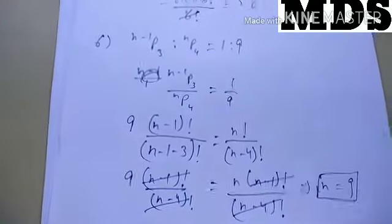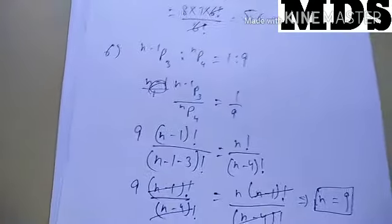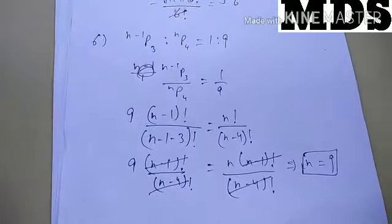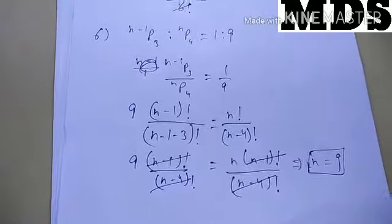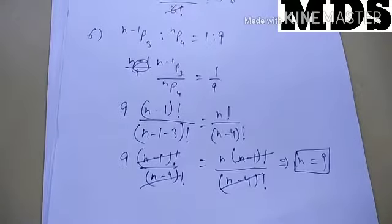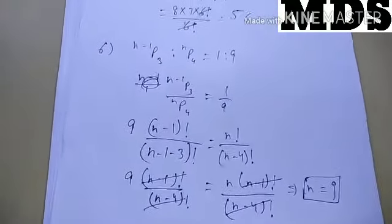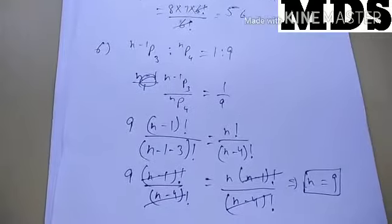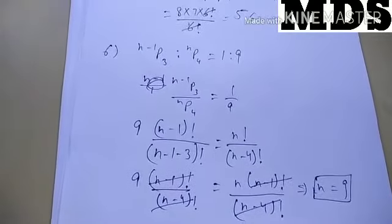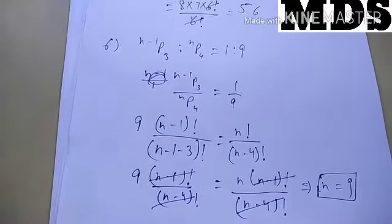The (n−1)! cancels, and we get the value of n is 9. Similarly, in some questions two parts are given where we have to find the value of r, and we can find it in a similar way.